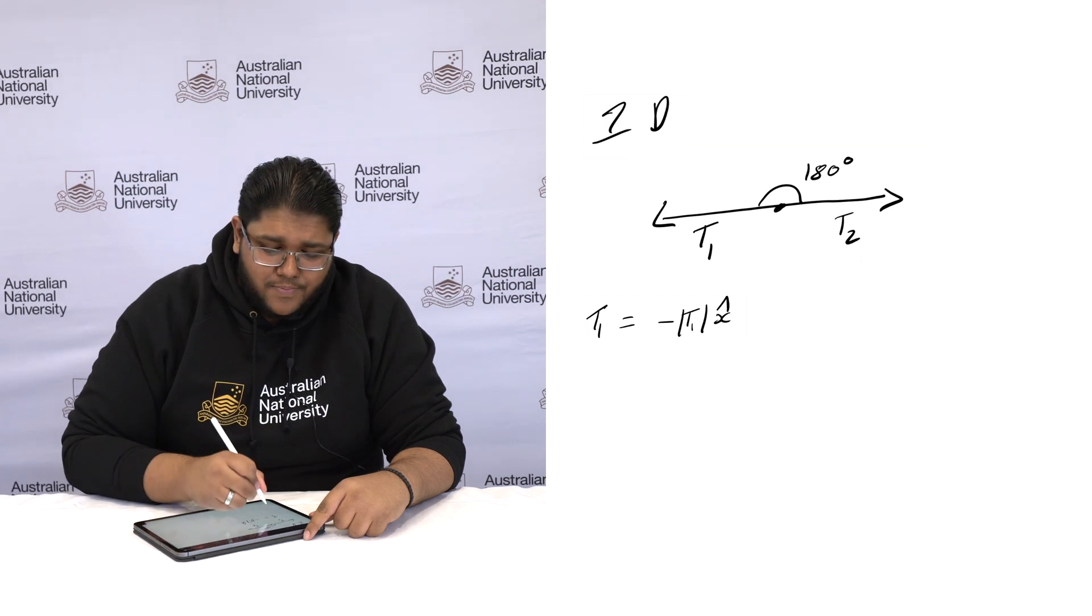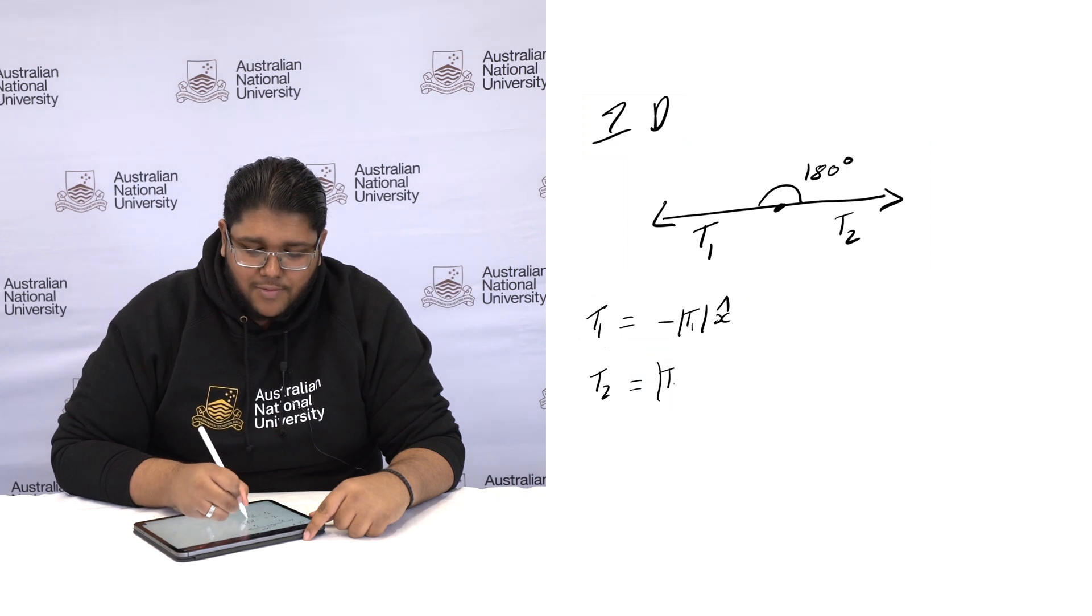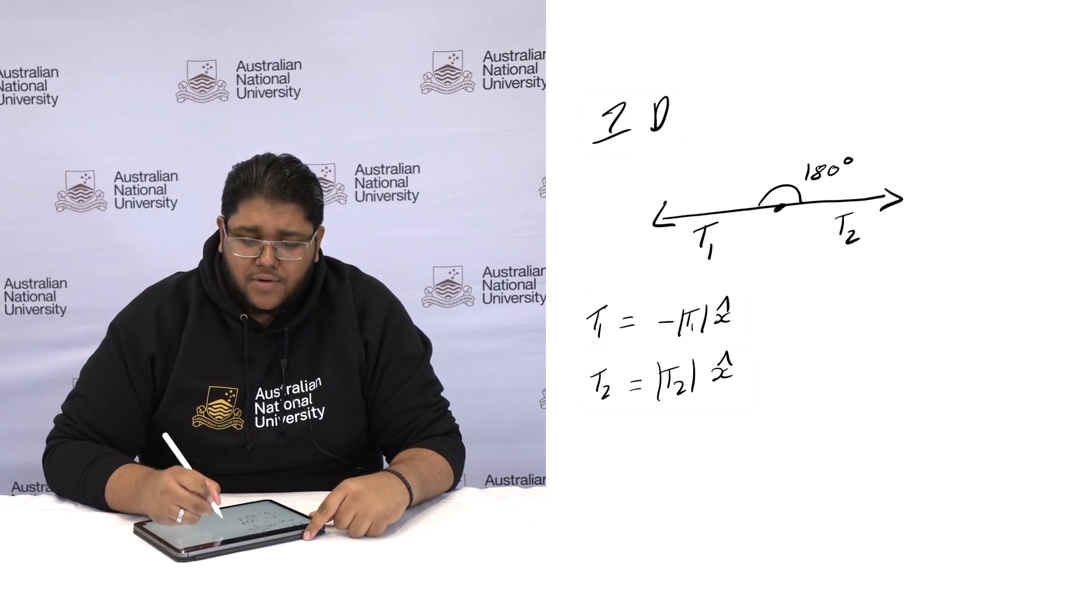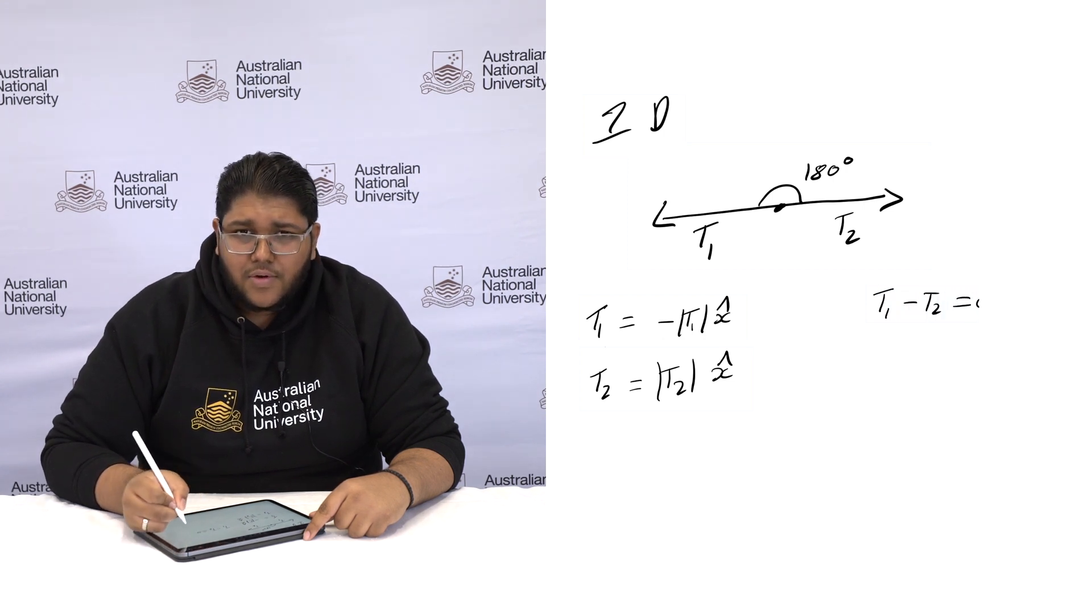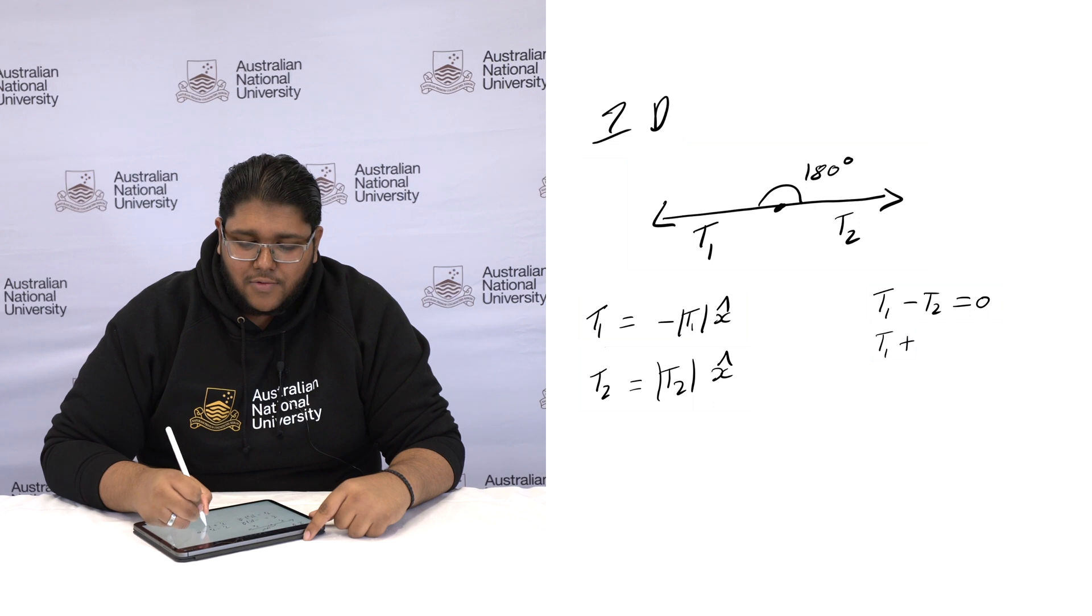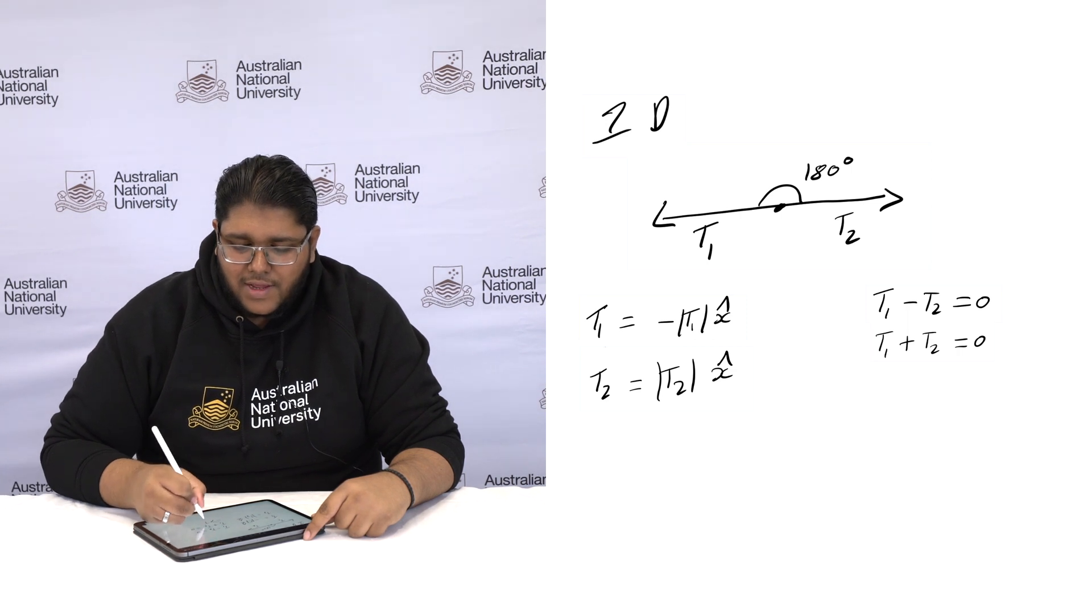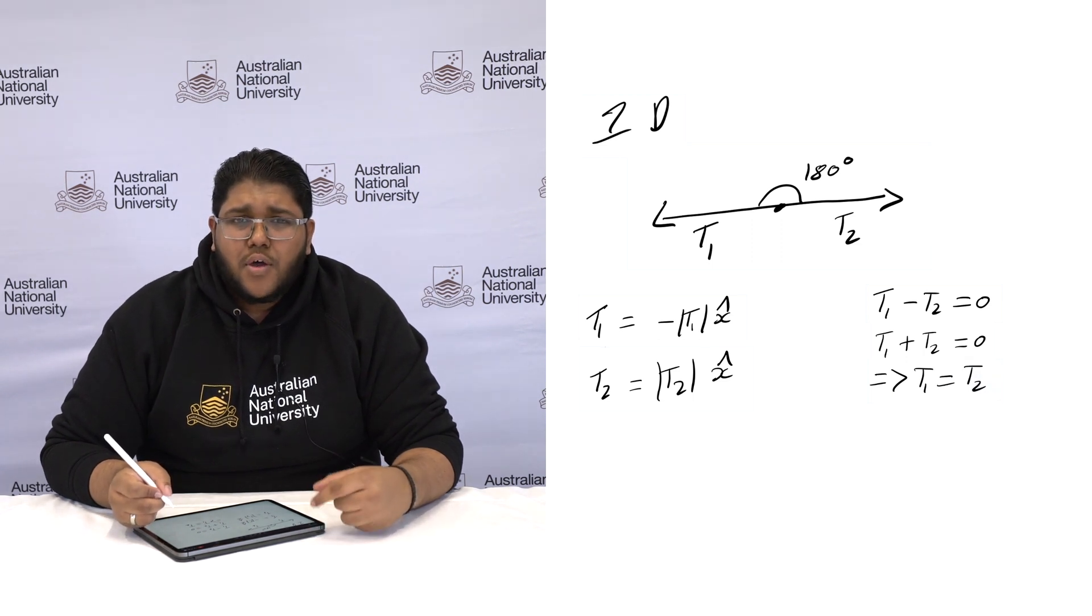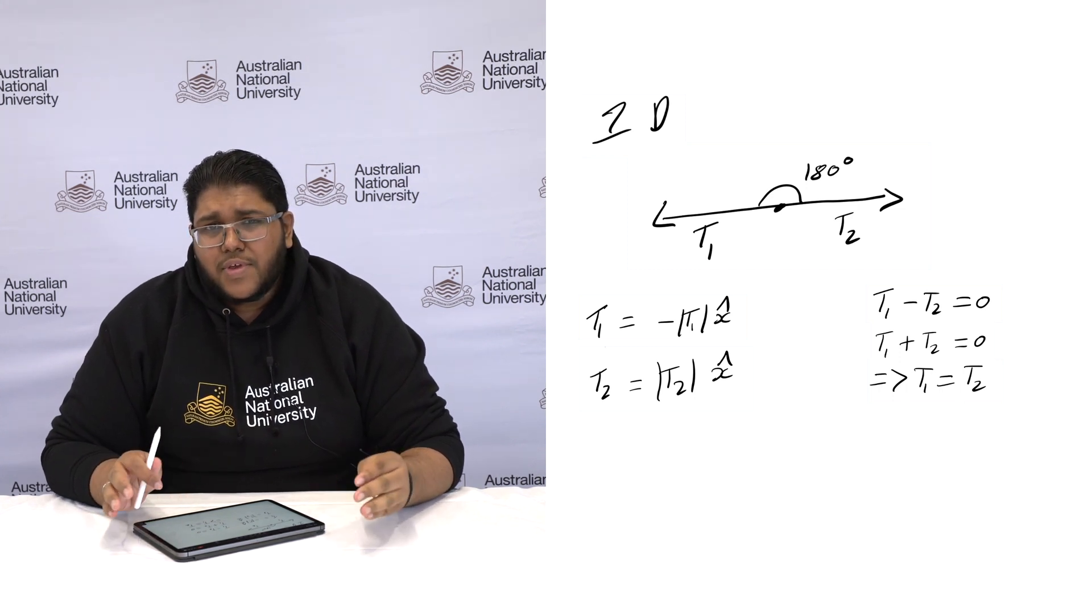Given that it's one dimension there is only one direction that force can be exerted. And then we have t2. T2 would equal t2 absolute value in the direction of x. We can also tell that t1 minus t2 equals 0 and t1 plus t2 equals 0. And from that we can say that t1 equals t2. And therefore we have a situation where it is the optimal structure as the force applied to both spaghetti strands is equal.